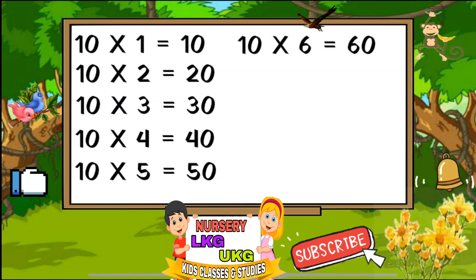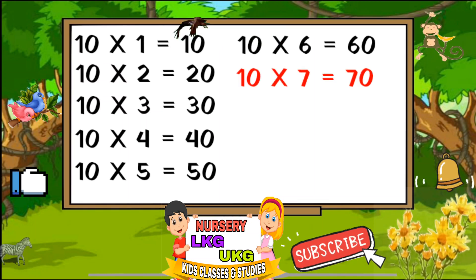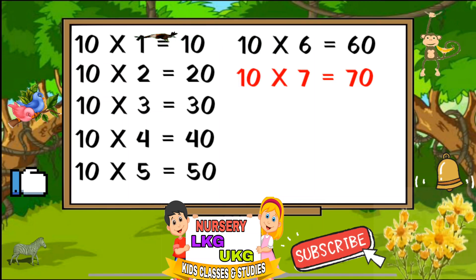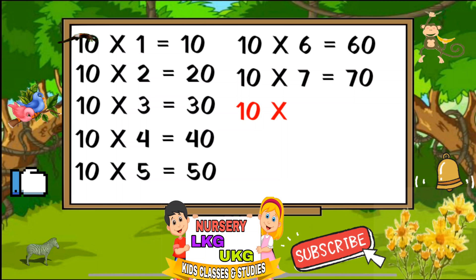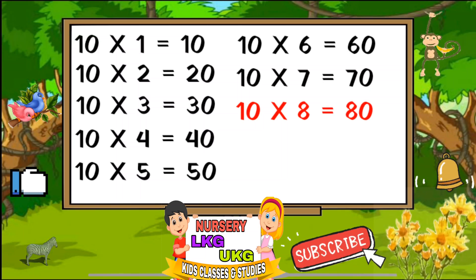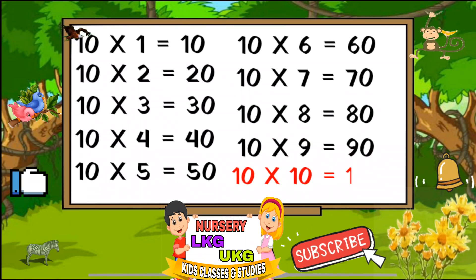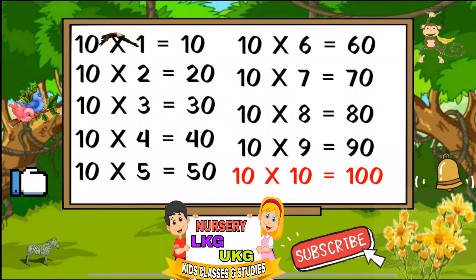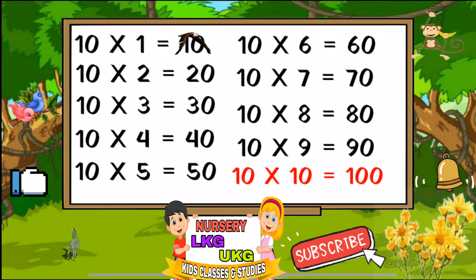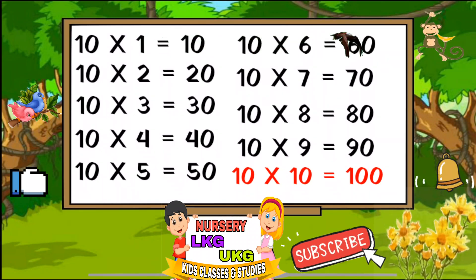Ten sixes are sixty. Ten sevens are seventy. Ten eights are eighty. Ten nines are ninety. Ten tens are hundred. Now you can read it properly.